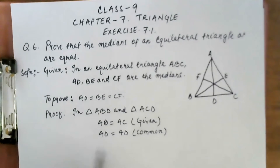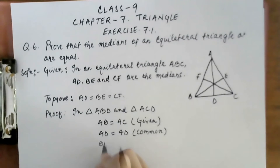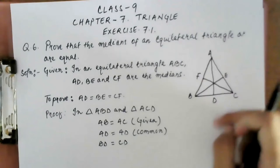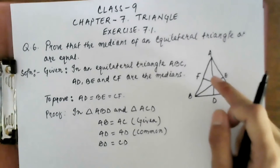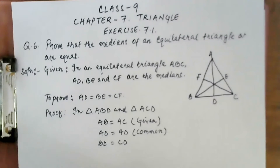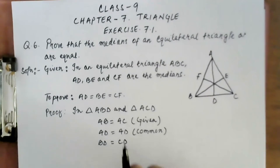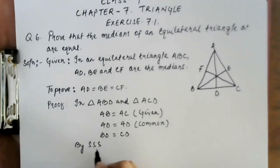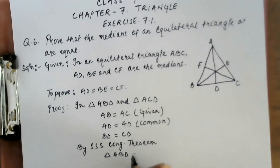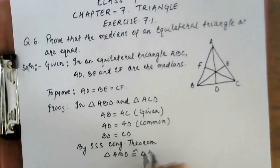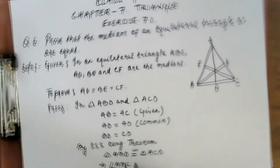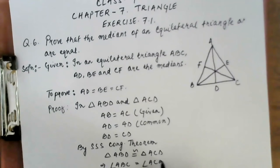Next, BD = CD, because in triangle ABC, BC is divided into two equal parts by the median AD. So BD = CD. Now we can use the SSS (Side-Side-Side) congruence theorem: triangle ABD is congruent to triangle ACD. This implies angle ABC = angle ACB.